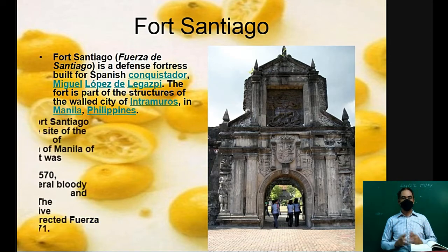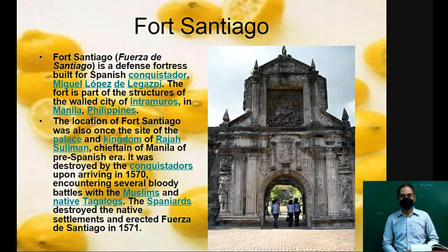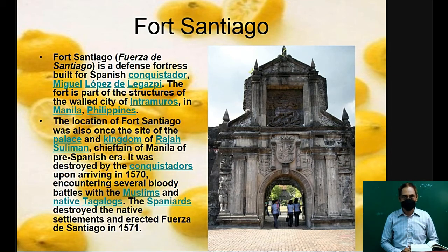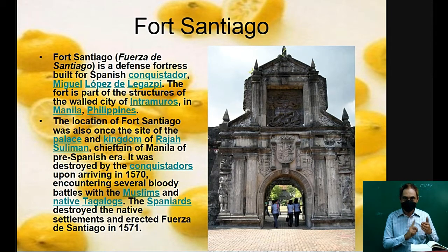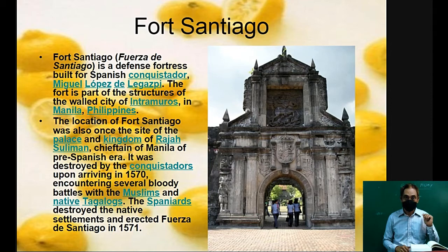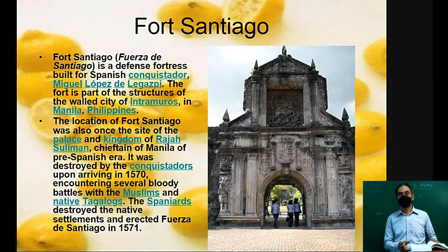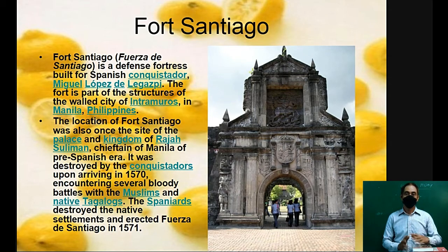Located in Manila, the Philippines, the site of Fort Santiago was also one of the sites of the palace and kingdom of Raja Suleiman, chieftain of Manila, in the pre-Spanish era. It was destroyed by the conquistadores upon arriving in 1570. Encountering several bloody battles with the Muslims and native Tagalogs, the Spaniards destroyed the native settlements and erected this Fuerza de Santiago, or Fort Santiago.